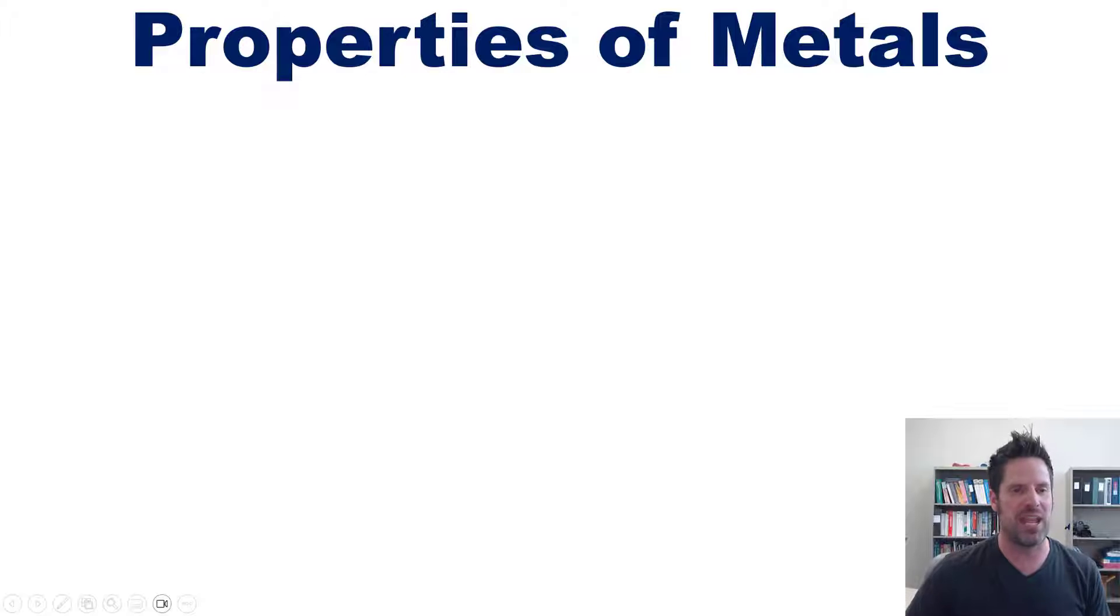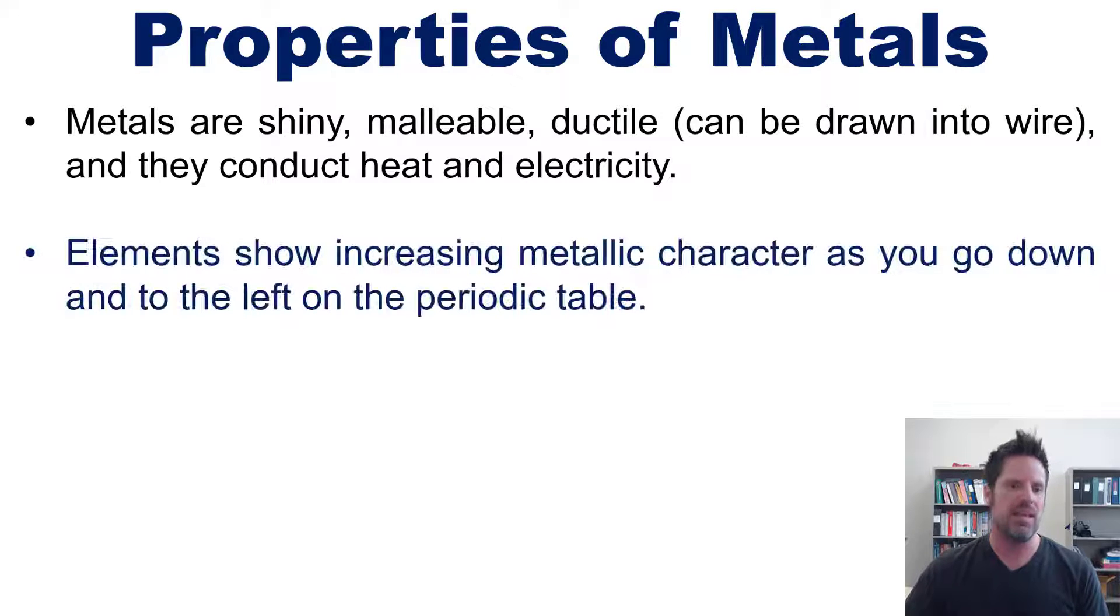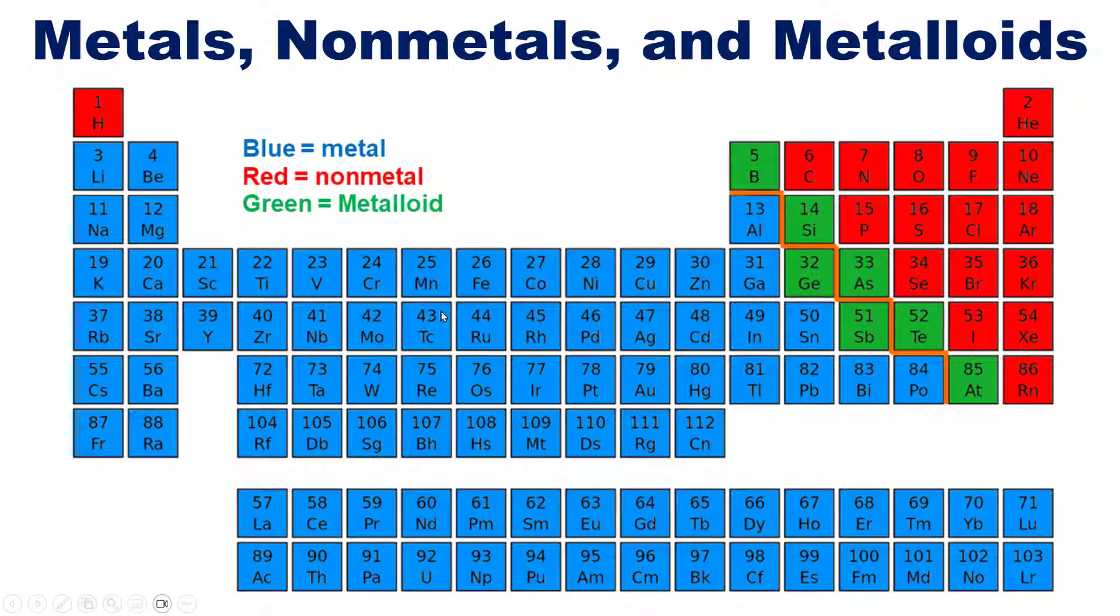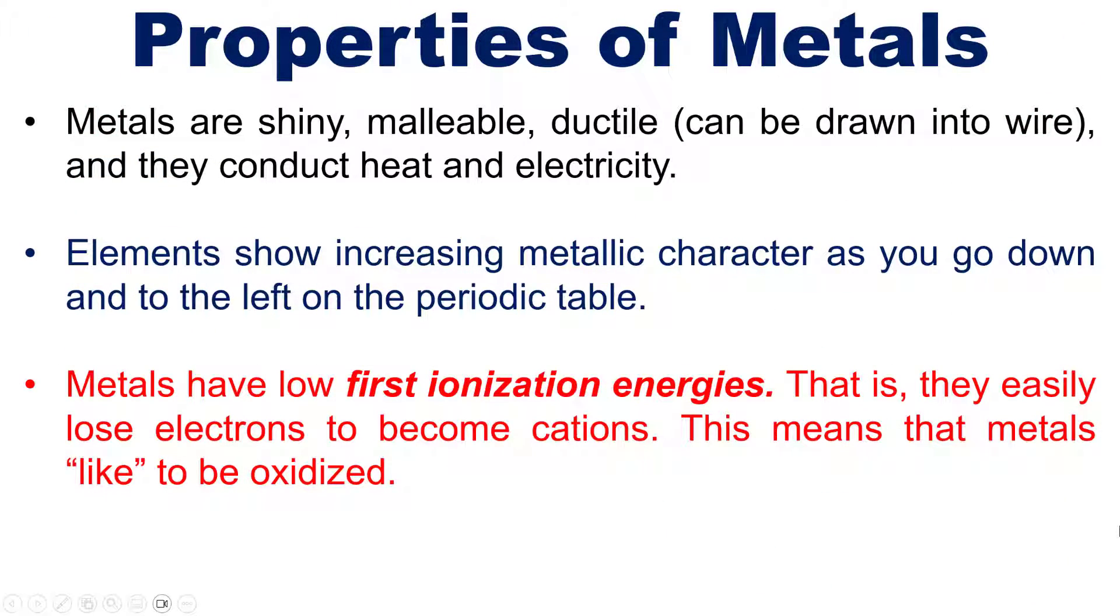So what properties do metals have? Metals are shiny, malleable, and ductile. Ductile means they can be drawn into wire, and they conduct heat and electricity. Elements show increasing metallic character as you go down and to the left on the periodic table. Furthermore, metals have low first ionization energies. That is, they easily, relatively speaking, lose electrons to become cations, positively charged atoms. This means that metals like to be oxidized, that is they like to lose electrons.